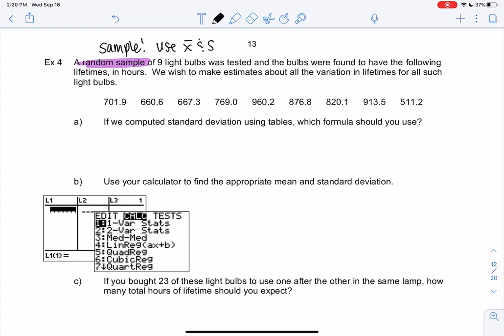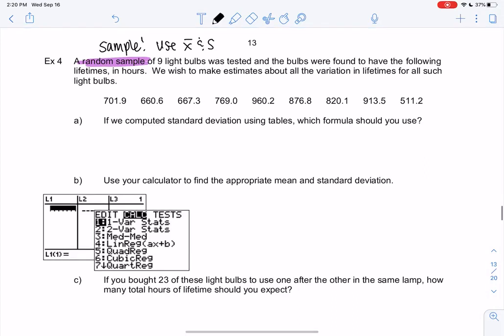If we were going to use formulas, which formula would we use? Because this is a sample, we'll use s which is the square root of (x - x̄)² all over n - 1. Remember, the big difference for samples was dividing by n - 1, but the calculator will do that for us.